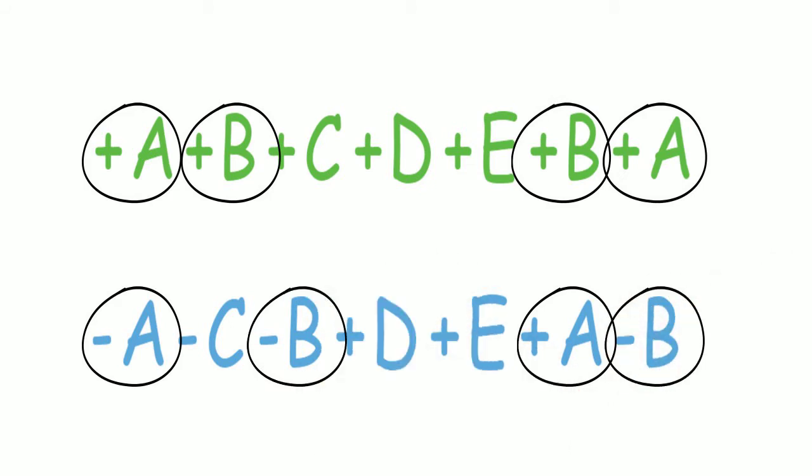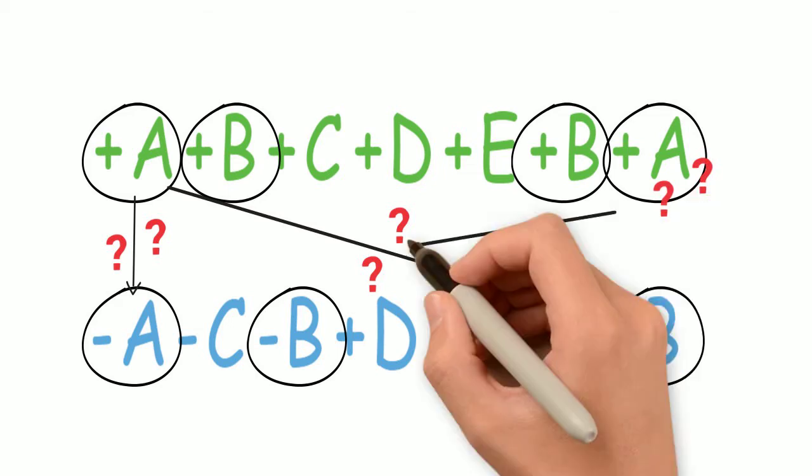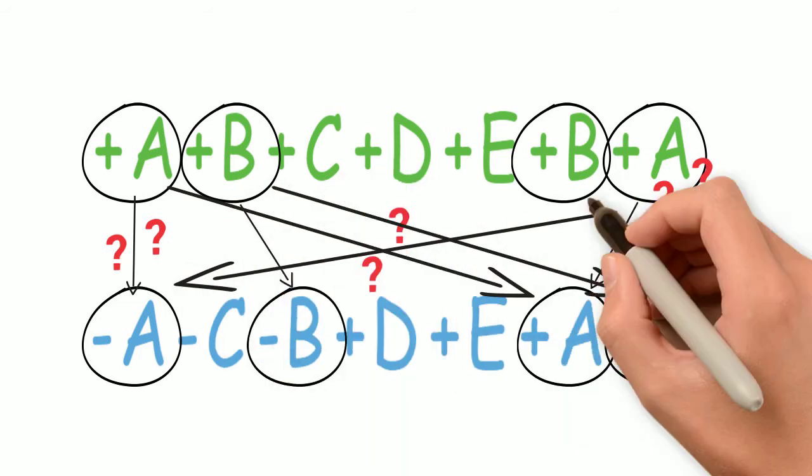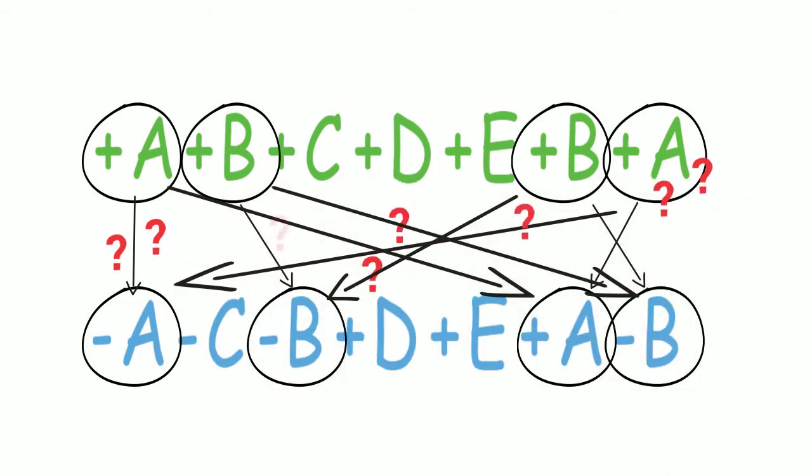In other words, we cannot assume that the first copy of gene A in the first genome corresponds to the first copy of gene A in the other genome. As a result, all the possibilities of one-to-one relationships between the gene copies need to be taken into consideration to find the best possible solution, which obviously requires a lot of computation.